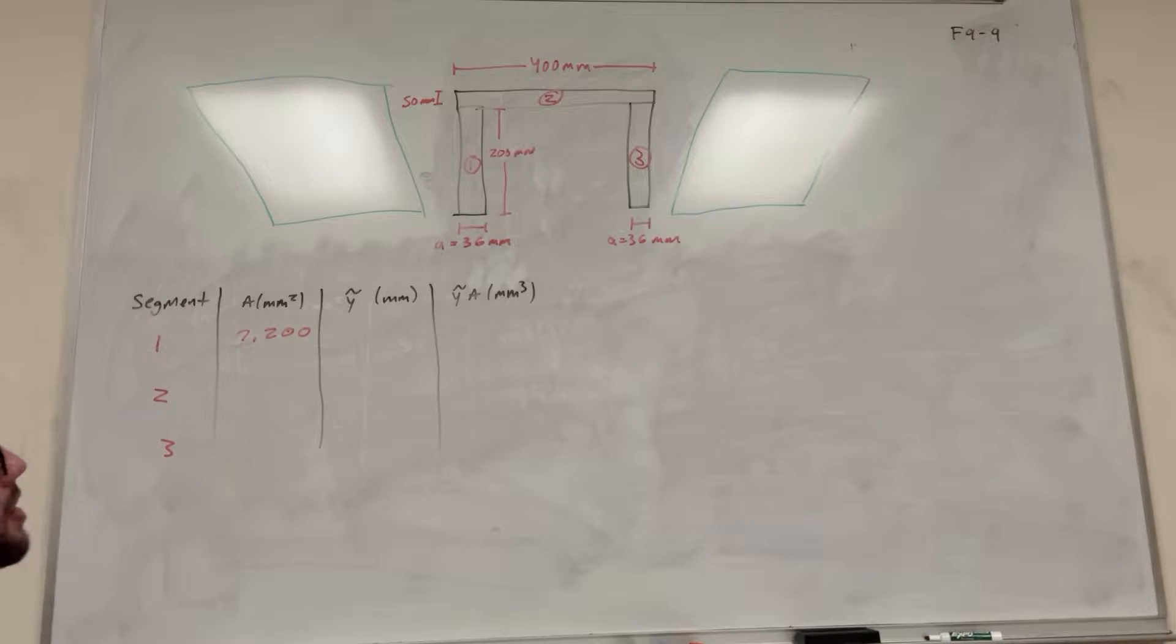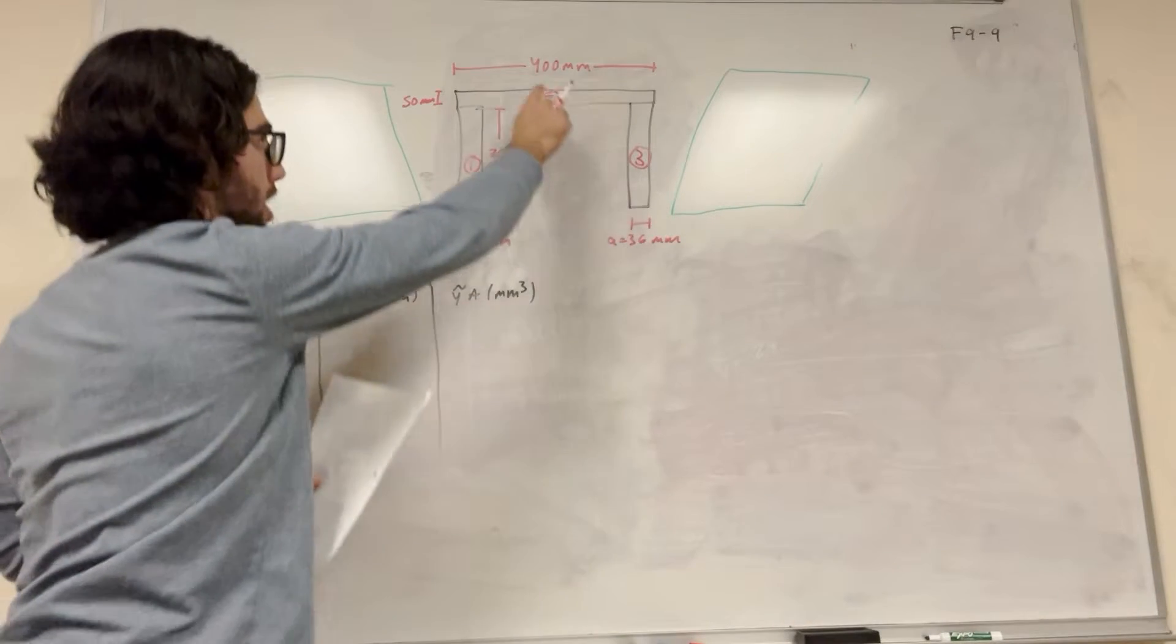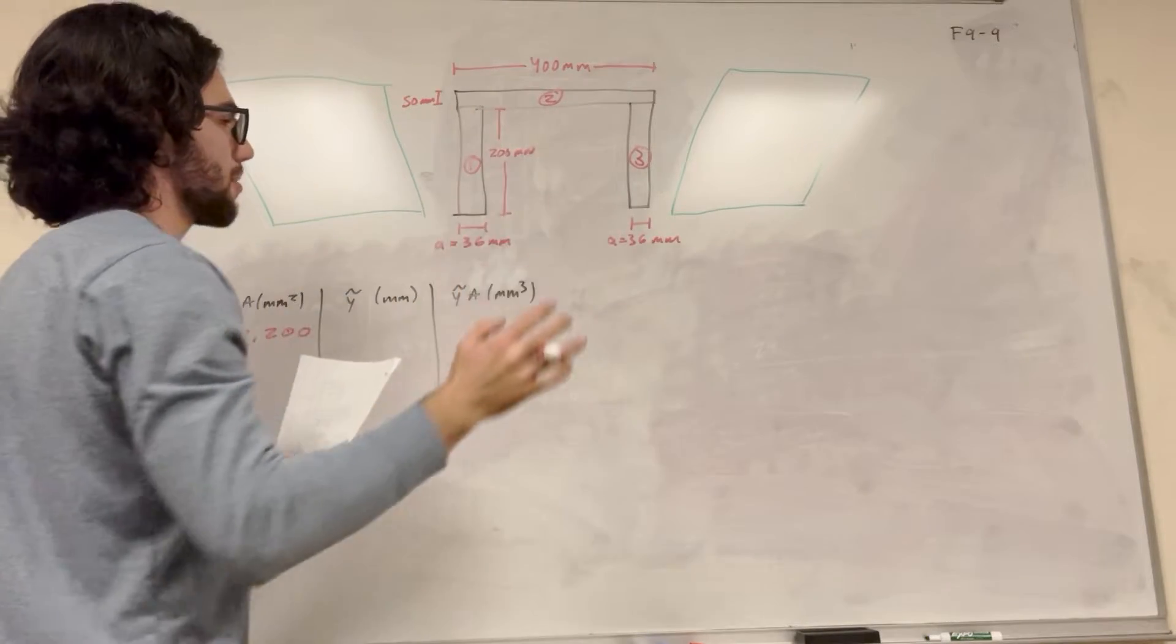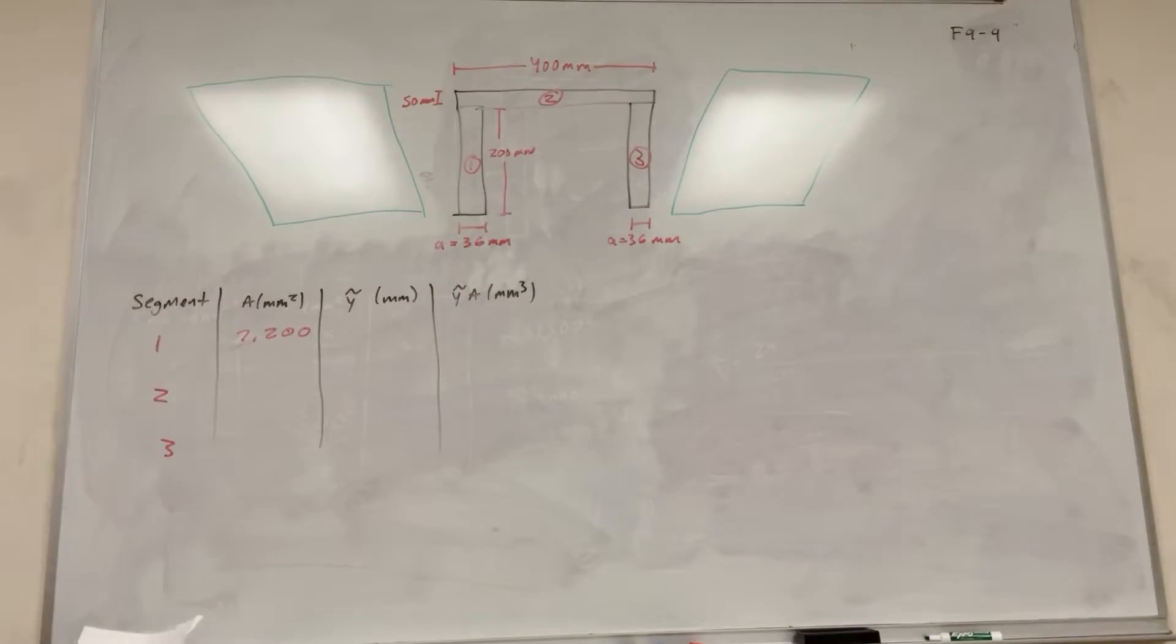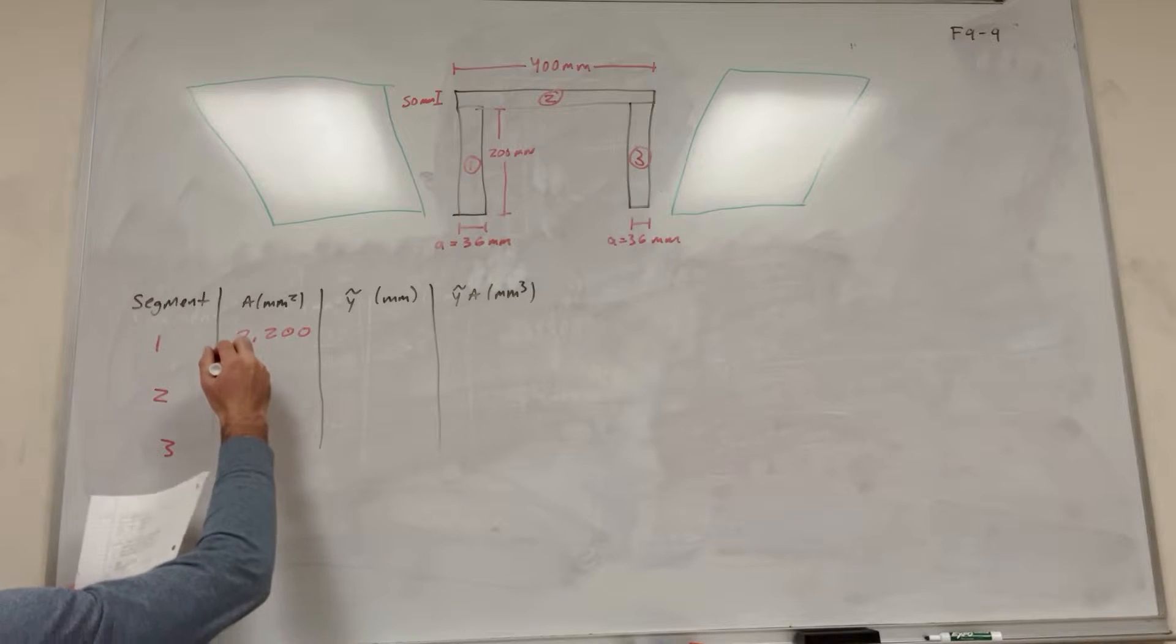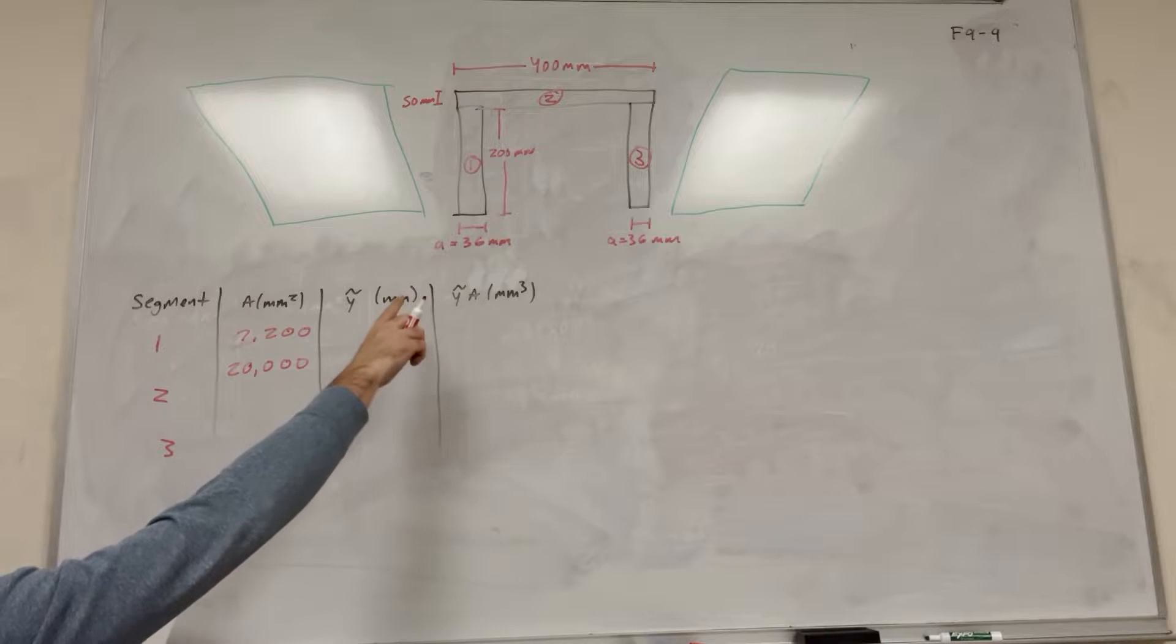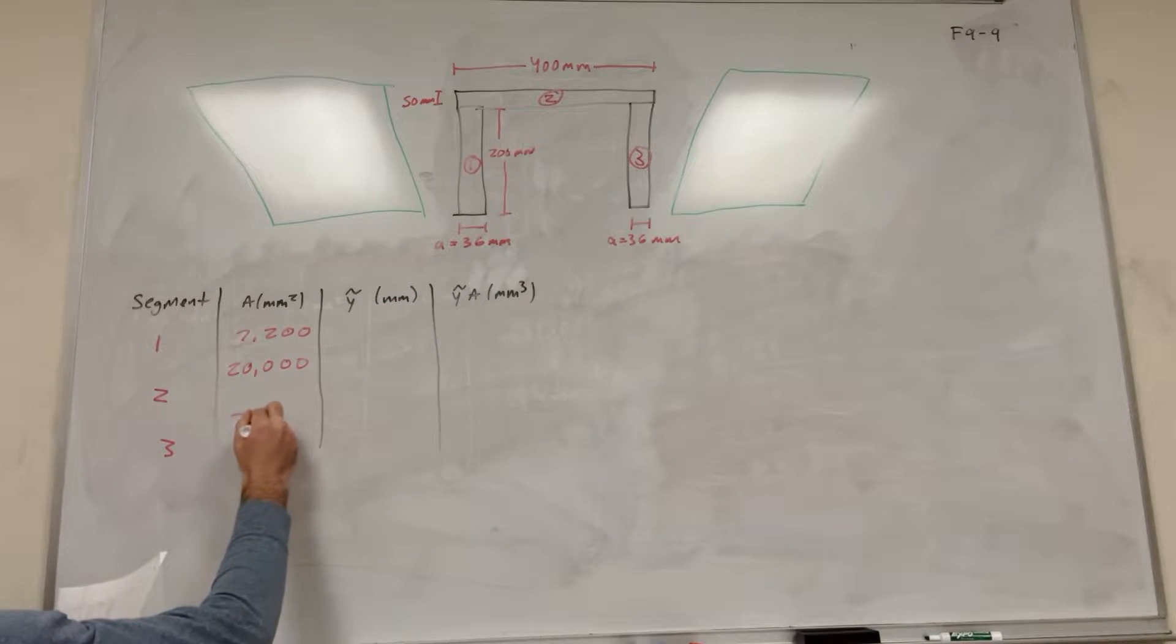So then for segment 2, segment 2 is 400 long and 50 wide, or 50 tall, so it's going to be 400 times 50. So 400 times 50 is 20,000. And then segment 3 is the same as segment 1, 7,200.